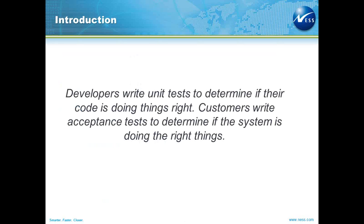I would like to begin with these two lines: developers write unit tests to determine if their code is doing things right, and customers write acceptance tests to determine if the system is doing the right things. These lines aptly describe two major testing aspects — two mindsets — one from the developer angle and one from the QA or customer angle. Unit testing is done by developers, and acceptance tests can be done by customers as well as by the QA.